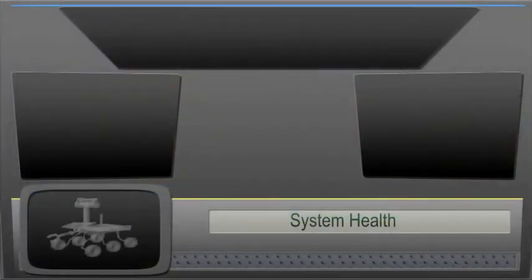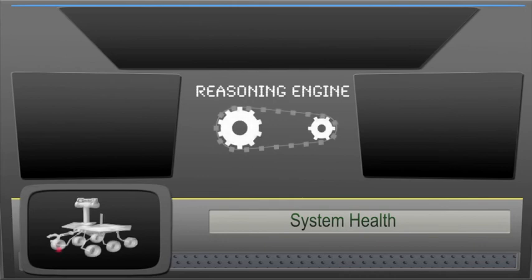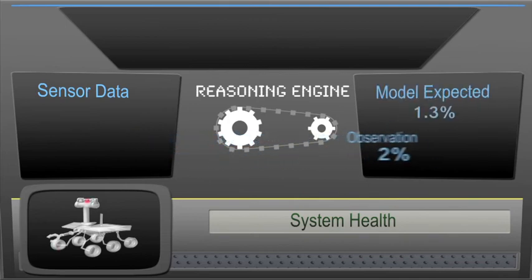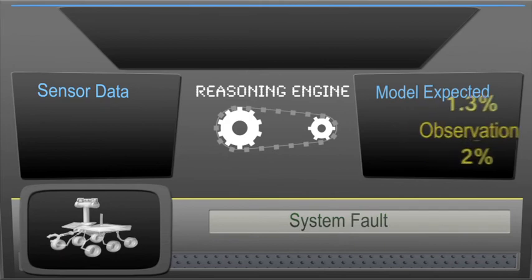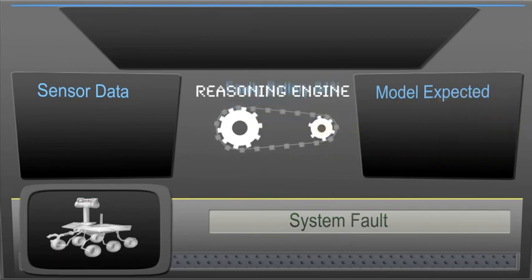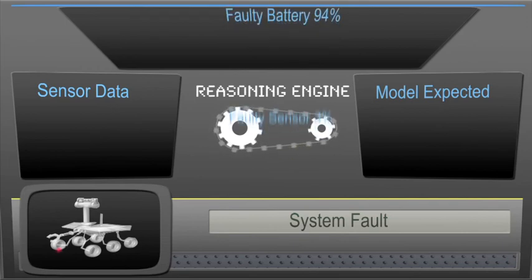The second main component of Hyde is its reasoning engine. With its advanced algorithms, Hyde's reasoning engine uses sensor input to observe the actual behavior of a system and compares this behavior to models describing how the system should work. If the observed system behavior does not match the modeled system behavior, Hyde reasons about the potential faults that could cause the system's current behavior.